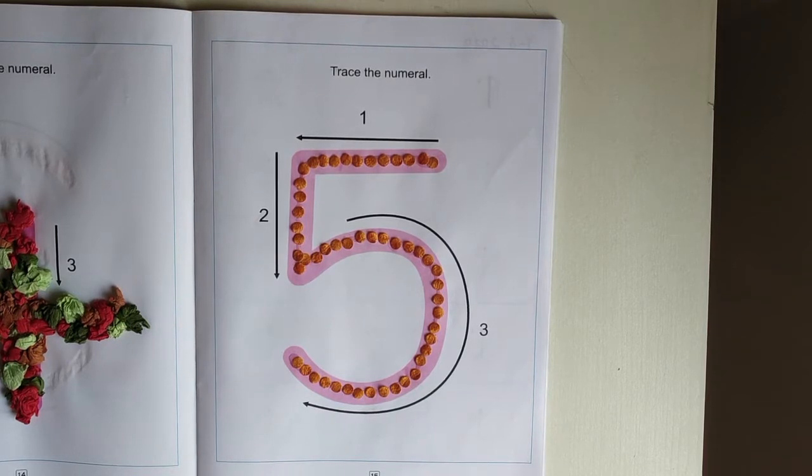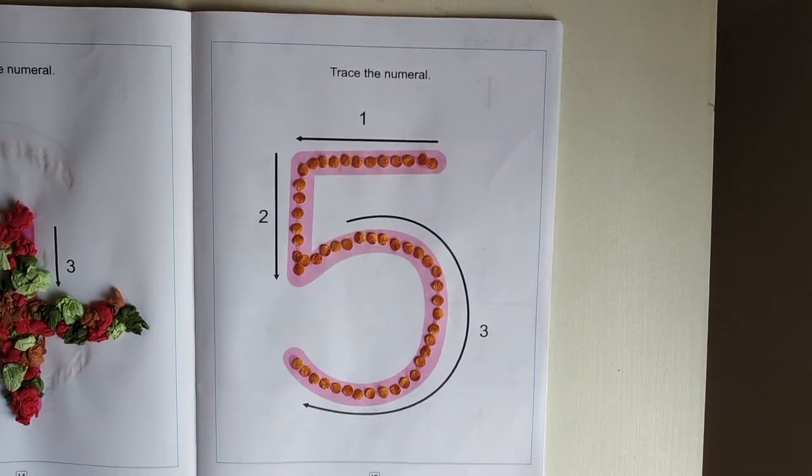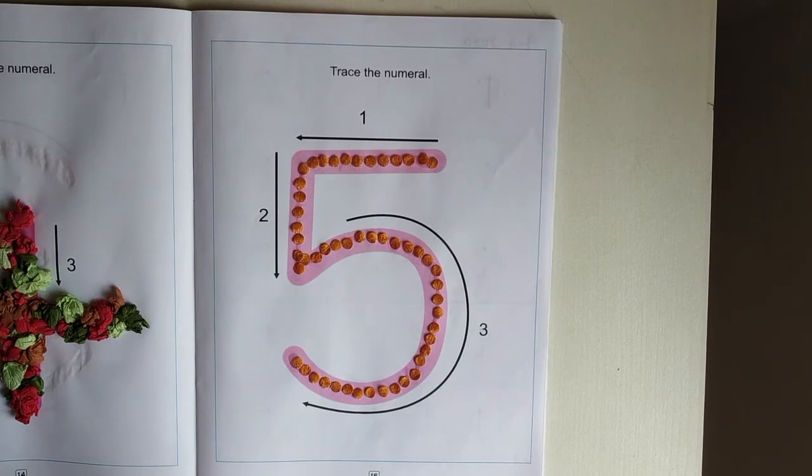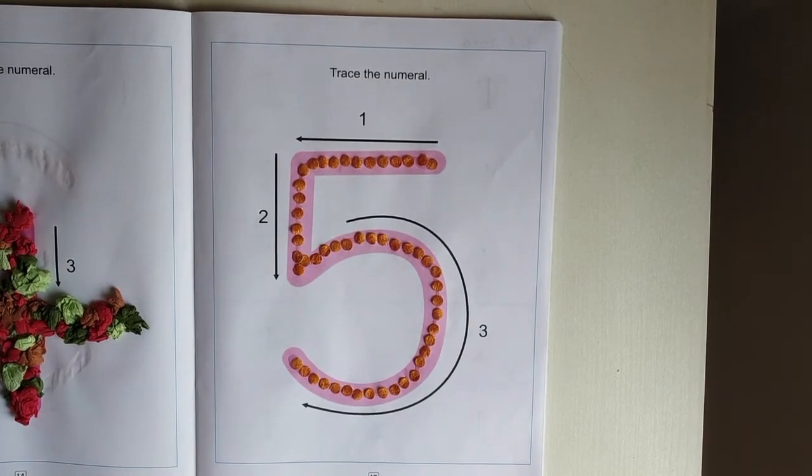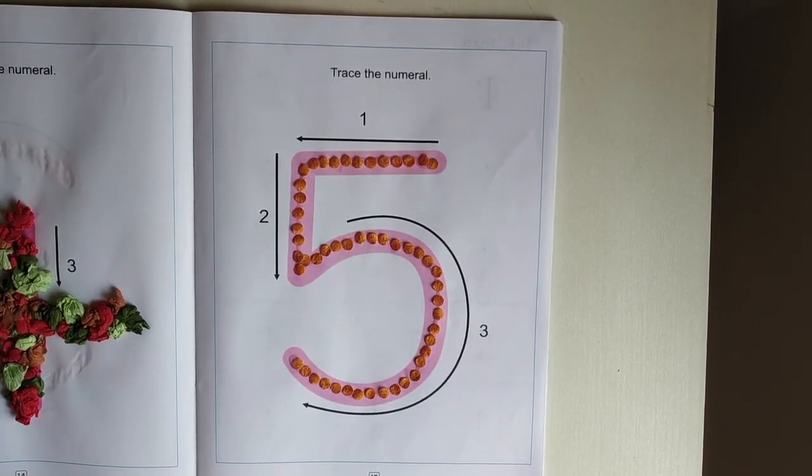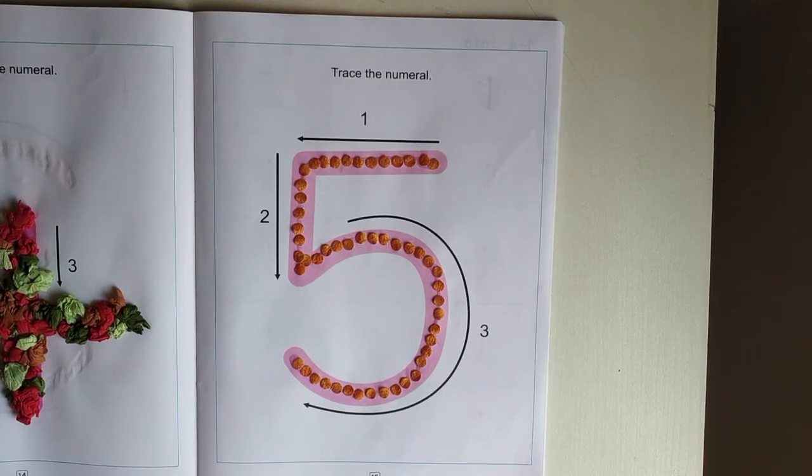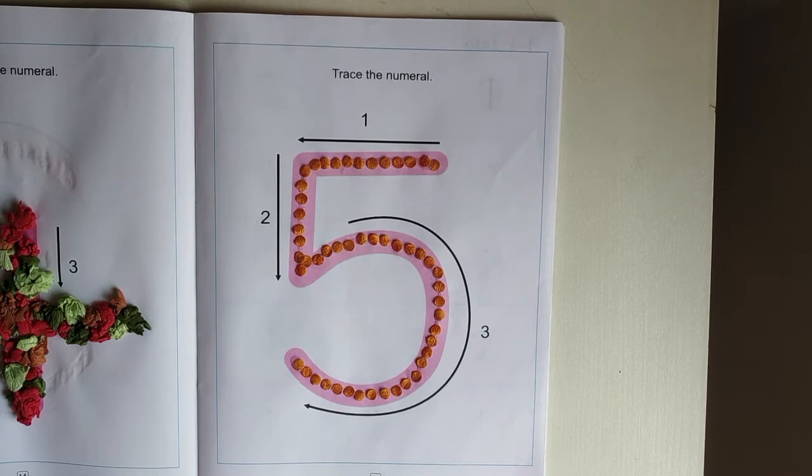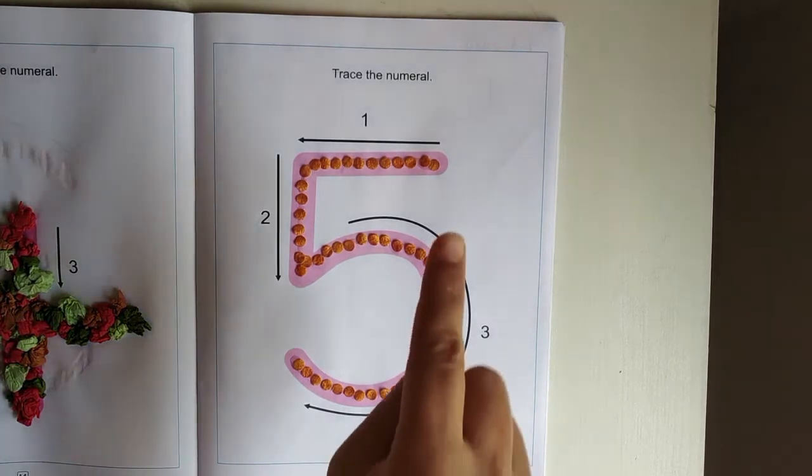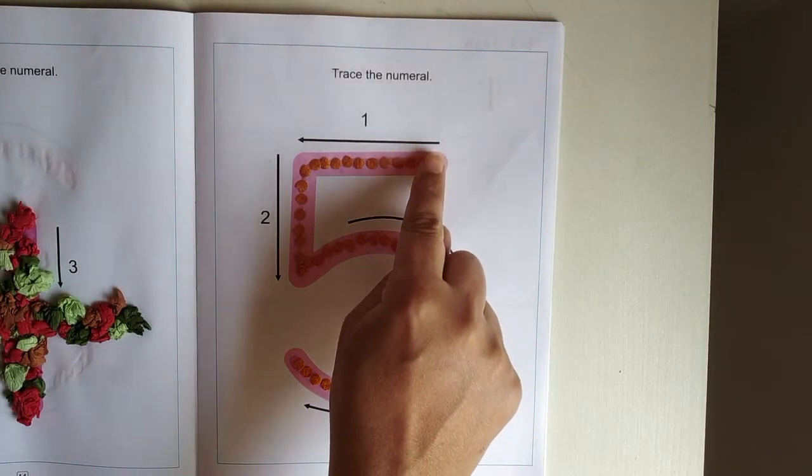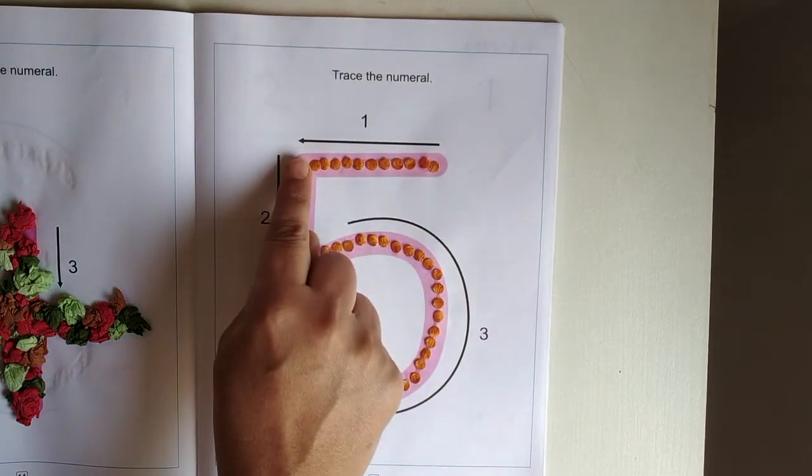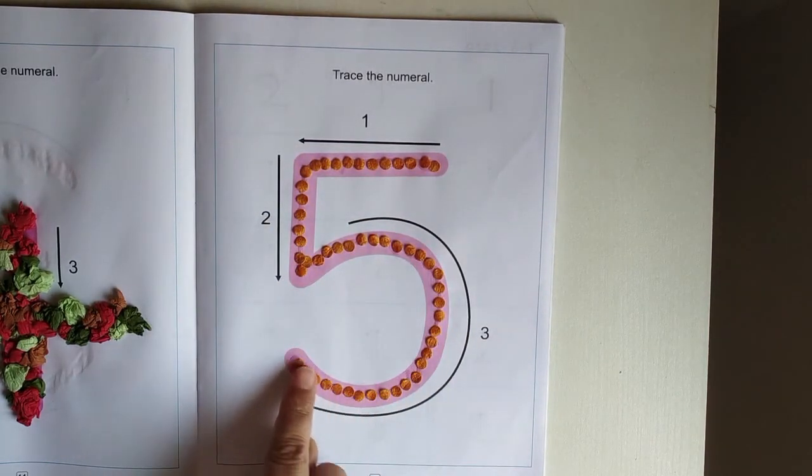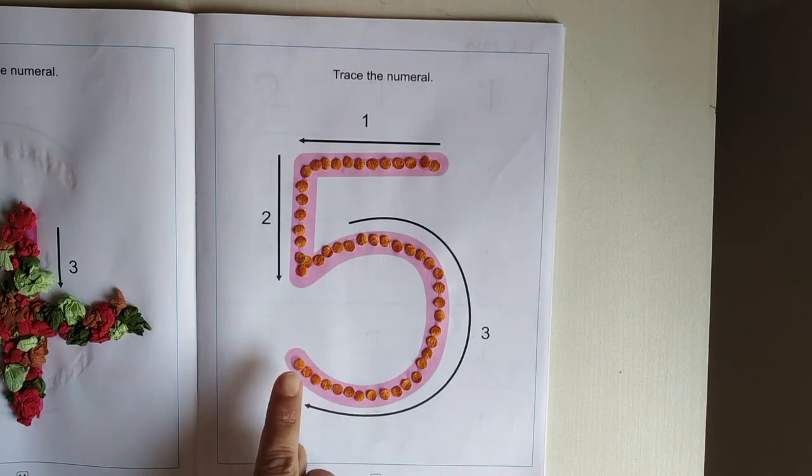My activity is completely dry. So, what are we going to do now? Now, we are going to trace number 5 with our pointer finger. Like this. Start from here. Start from here. Down and curve. 5.